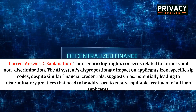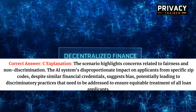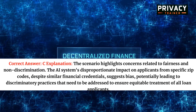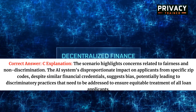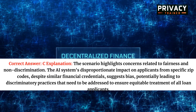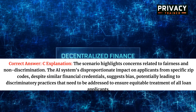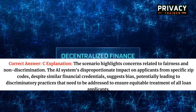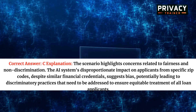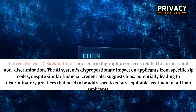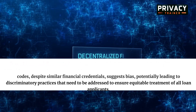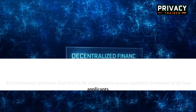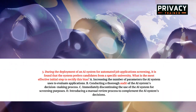Correct answer: C. The scenario highlights concerns related to fairness and non-discrimination. The AI system's disproportionate impact on applicants from specific zip codes, despite similar financial credentials, suggests bias, potentially leading to discriminatory practices that need to be addressed to ensure equitable treatment of all loan applicants.